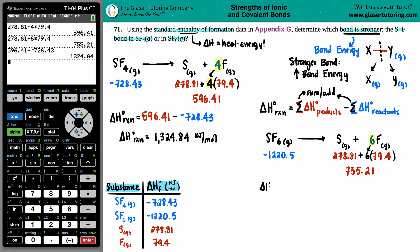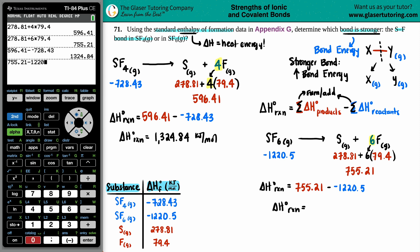For SF6: delta H = 755.21 - (-1220.5). Let's compute that number.